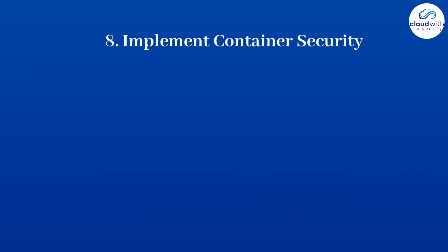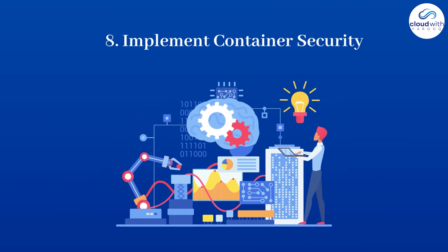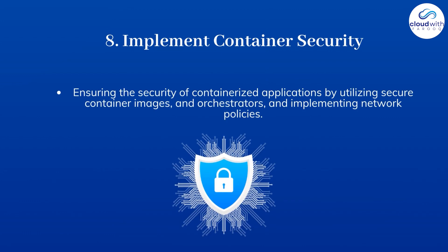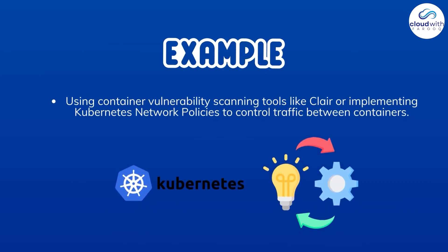Number 8: Implement container security. Ensuring the security of containerized applications by utilizing secure container images, orchestrators, and implementing network policies. For example, using container vulnerability scanning tools like Clair, or implementing Kubernetes network policies to control traffic between containers.